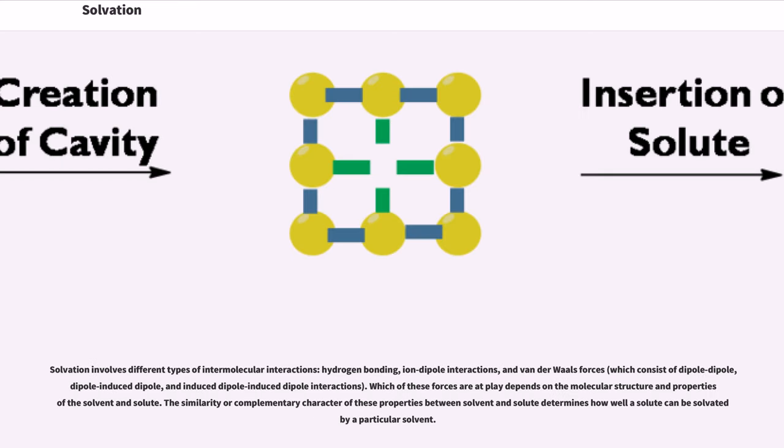Solvation involves different types of intermolecular interactions: hydrogen bonding, ion-dipole interactions, and van der Waals forces. Which of these forces are at play depends on the molecular structure and properties of the solvent and solute. The similarity or complementary character of these properties between solvent and solute determines how well a solute can be solvated by a particular solvent.